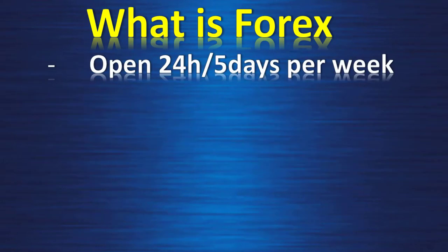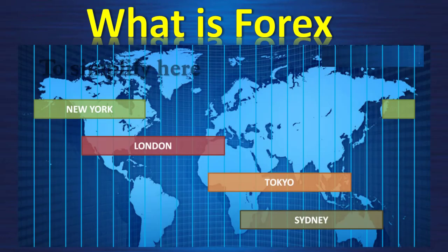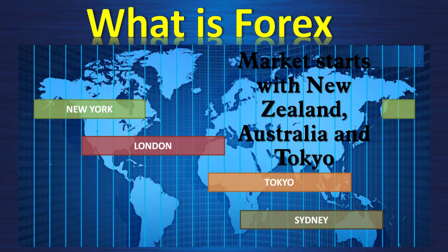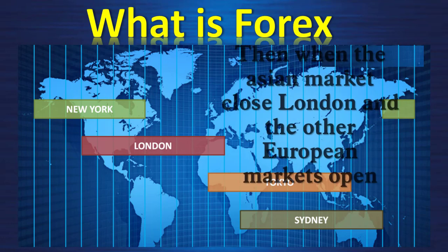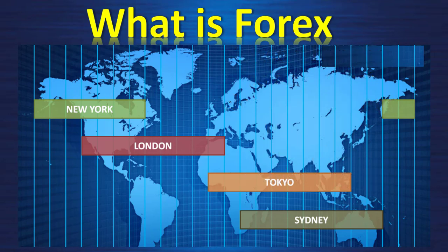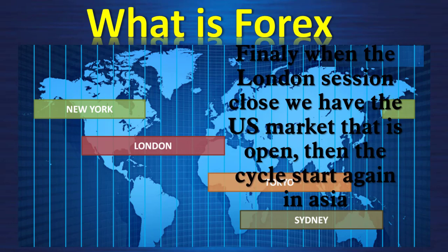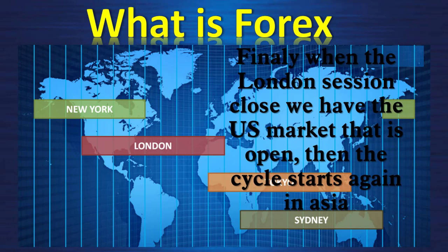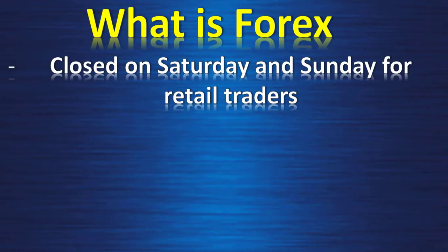The forex is open 24 hours, 5 days per week. The market opens with the New Zealand, Australia and Tokyo session. Then when the Asian session closes, London and the other European markets open. Finally when the London session closes we have the United States session, then the cycle starts again in Asia. This market is closed on Saturday and Sunday for retail traders.